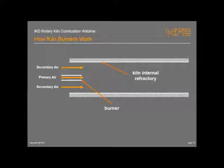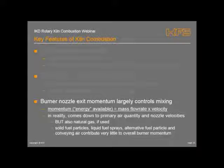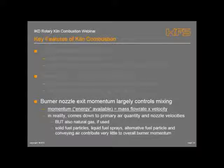Looking at how fuel-air mixing actually works: the burner nozzle exit momentum is largely controlled for mixing. Momentum, which is part of the energy available, is defined by the mass flow rate times velocity. Looking at the burner itself, the momentum is defined by the exit velocity of the primary air, its mass flow rate measured in SCFM or cubic meters per hour, and its velocity. The velocity is defined by the volume flow rate and the physical dimensions of the burner.